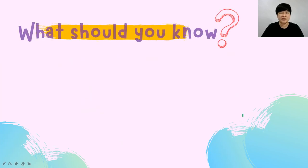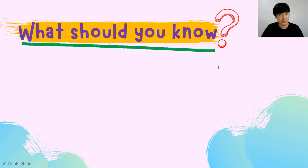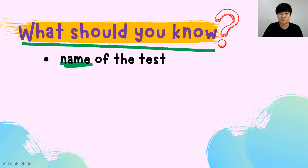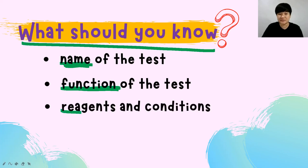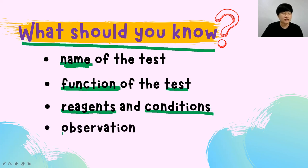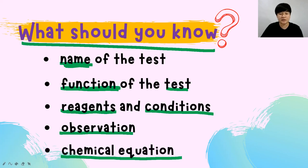Let's start with what you need to know about any chemical test — there are five things. First, the name of the test; make sure you can spell it correctly. Second, the function of the test, so you know when to use it. Third, the reagent and condition. Fourth, the observations for positive and negative results. Fifth, the chemical equation.